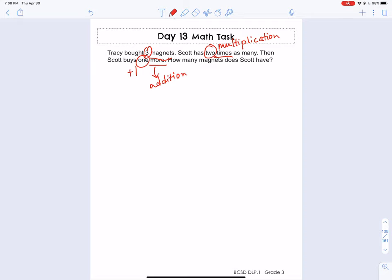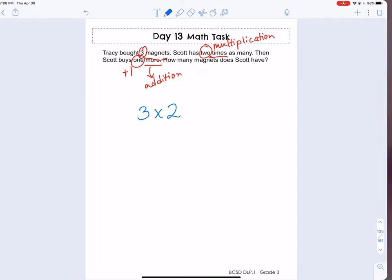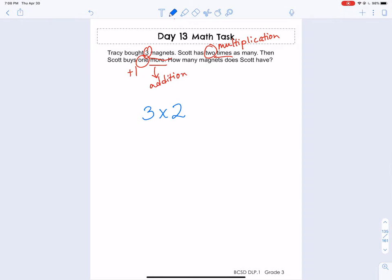So going back to the beginning, Tracy bought three magnets and then Scott has two times as many. So three times two because Scott has two times as many, as many what? He has two times as many magnets as Tracy. That's why we're doing three times two here. So we know that's six.